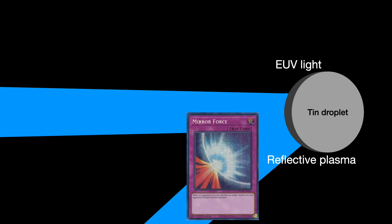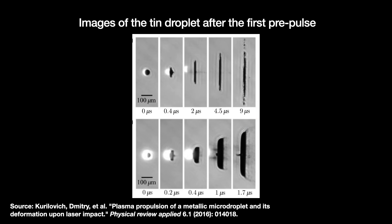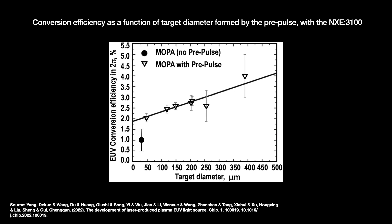It soon became clear that ASML and CYMER had to reshape the droplet before the main blast — the droplet needed to be flattened and expanded. Thus, they added the pre-pulse to the MOPA. When the pre-pulse hits the droplet, it rapidly vaporizes some of the material on its surface — this is called ablation. The pressure resulting from this ablation flattens and deforms the droplet into a disk, widening from 30 micrometers to 500 micrometers. The target disk might be just a few nanometers thick at the center. A nanosecond or so later, the main pulse arrives, heating the disk and creating the EUV light plasma.